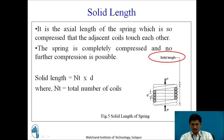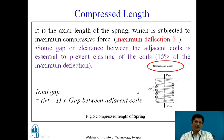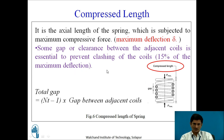Solid length: when the spring is fully compressed, all adjacent coils touch each other. Solid length is given as Nt × d, where Nt is the total number of turns and d is the wire diameter. Compressed length is the axial length of the spring subjected to maximum compressive force, at which maximum deflection delta occurs. A clearance of 15% of maximum deflection is provided as total clash allowance. Total gap equals (Nt − 1) multiplied by the gap between adjacent coils.